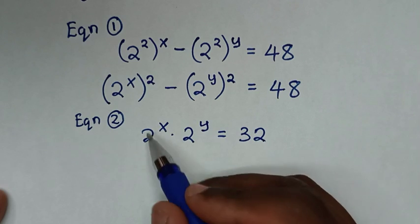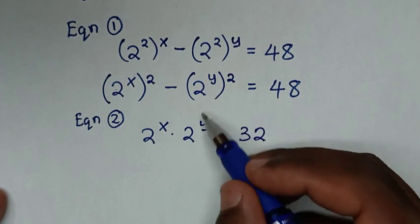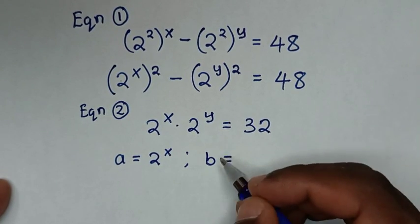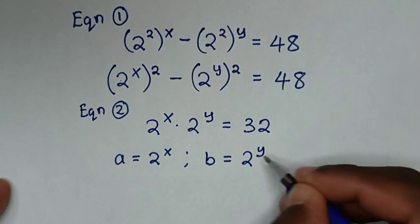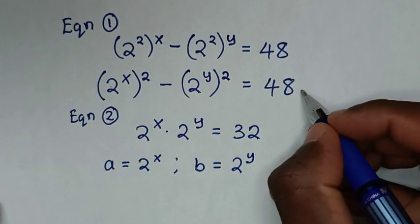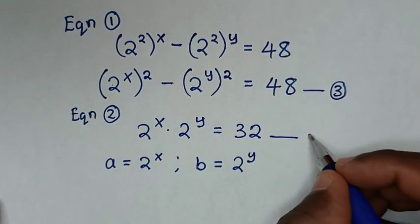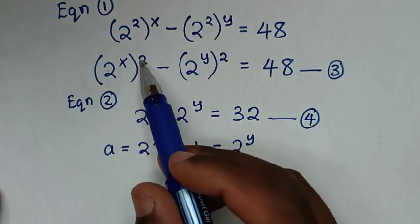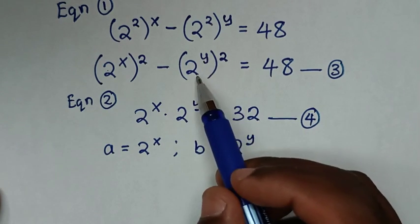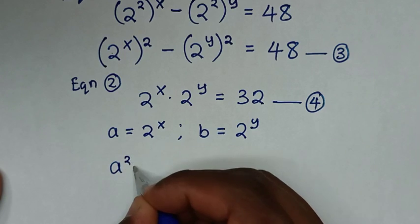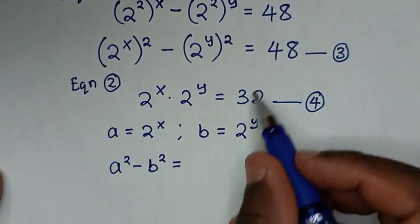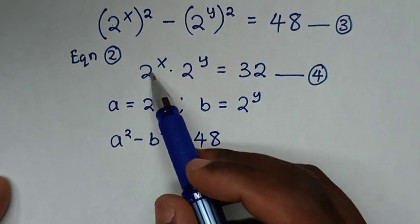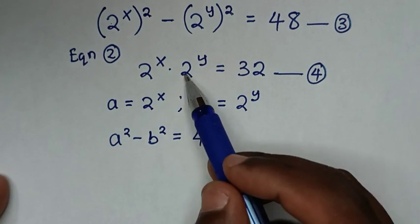From here, 2 power of x is common and 2 power of y is common, so we let a equal to 2 power of x and b equal to 2 power of y. We label these as equation 3 and equation 4. From equation 3, 2 power of x is a and 2 power of y is b, so it becomes a squared minus b squared equals 48. From equation 4, it will be a times b equals 32.